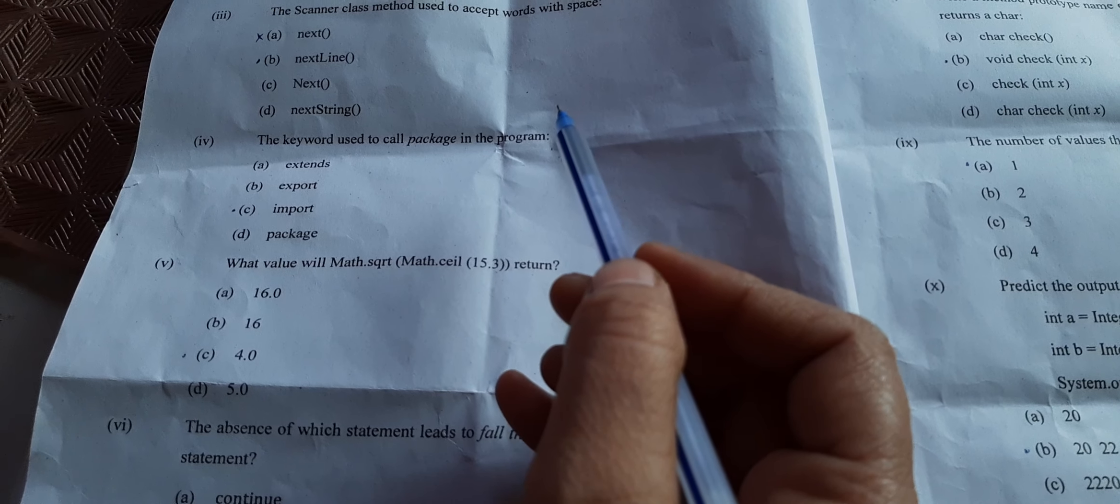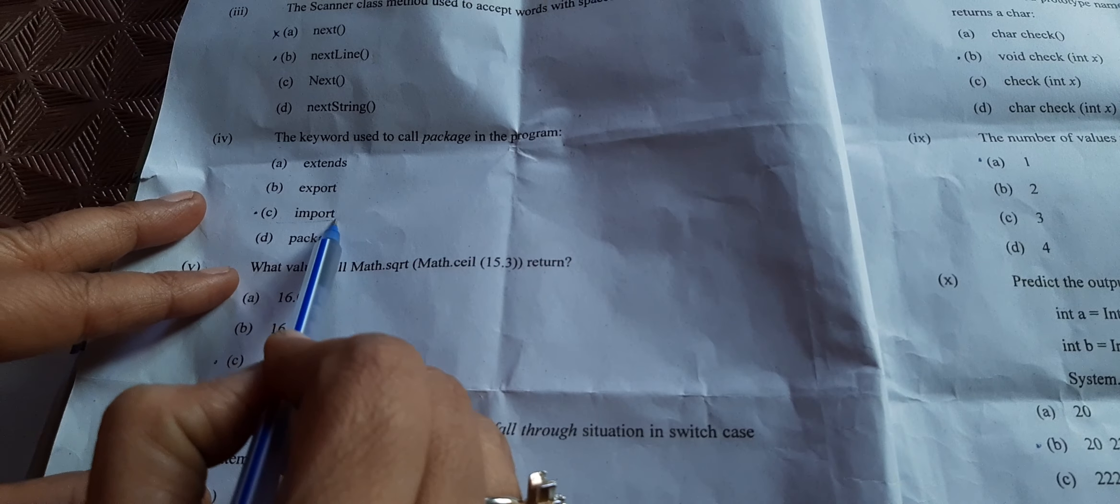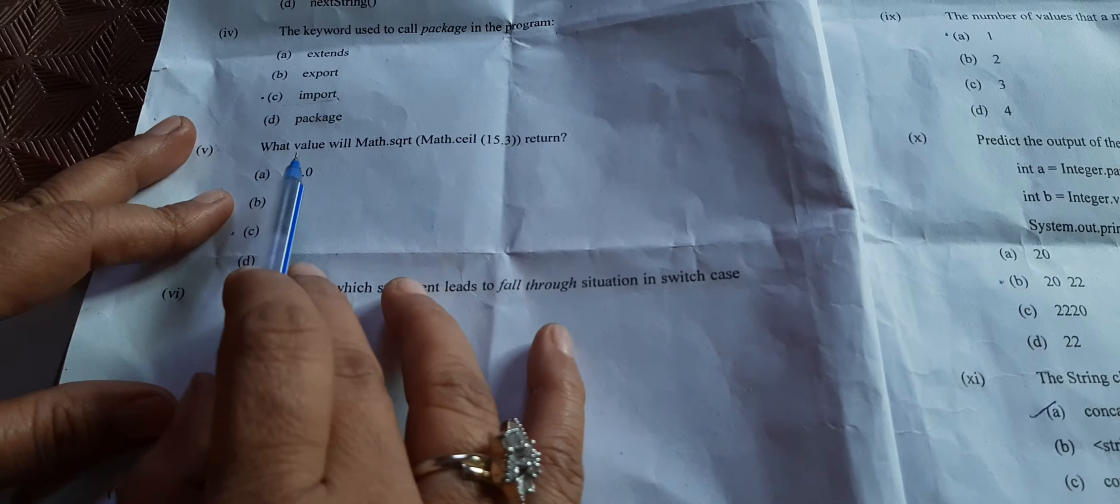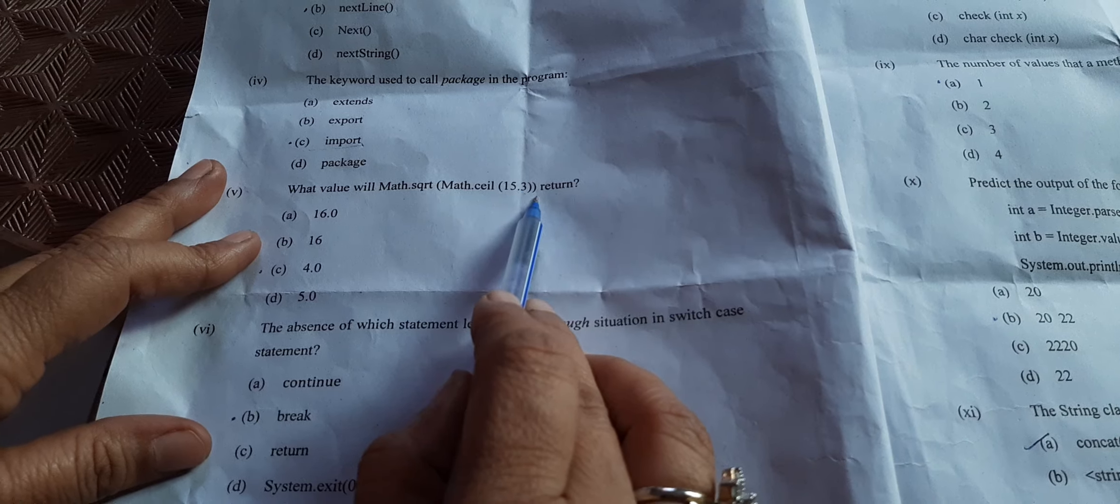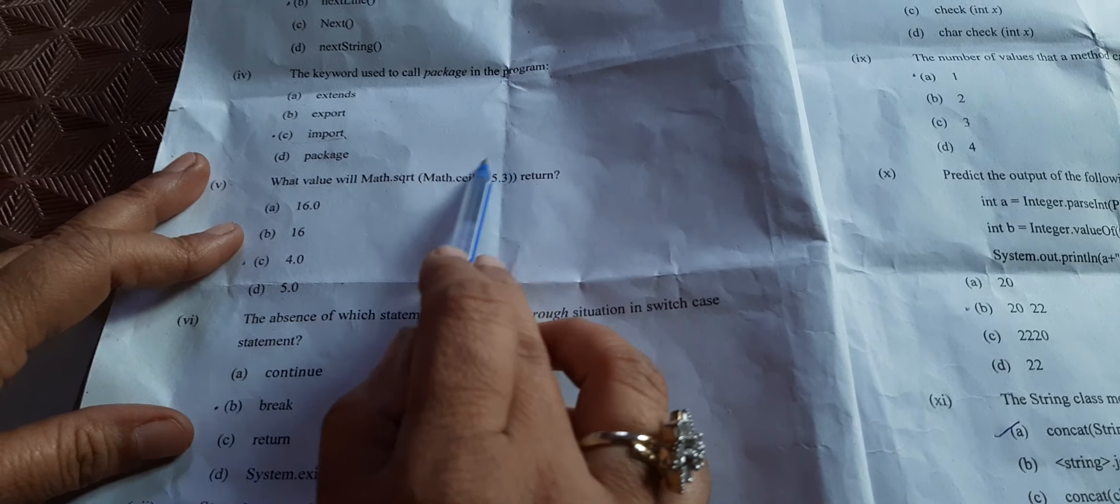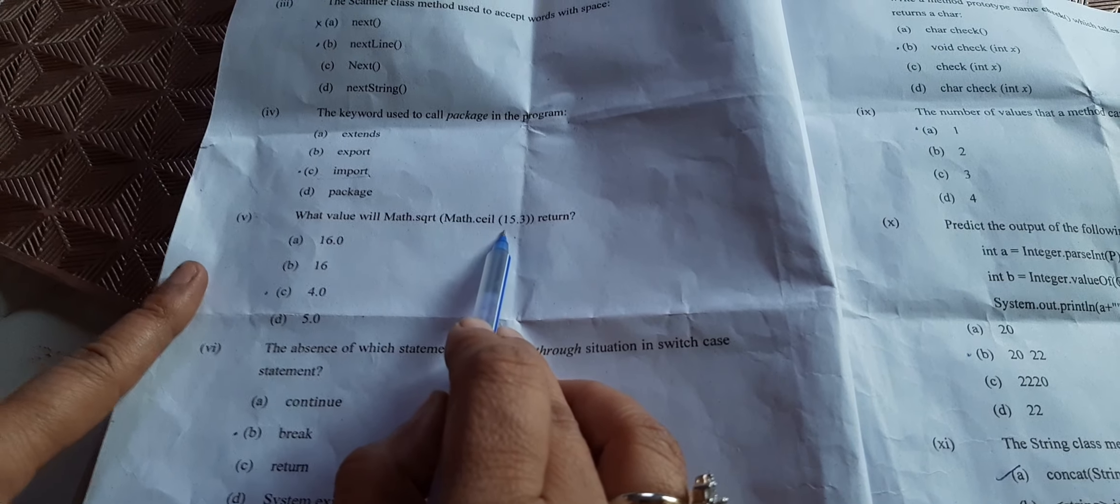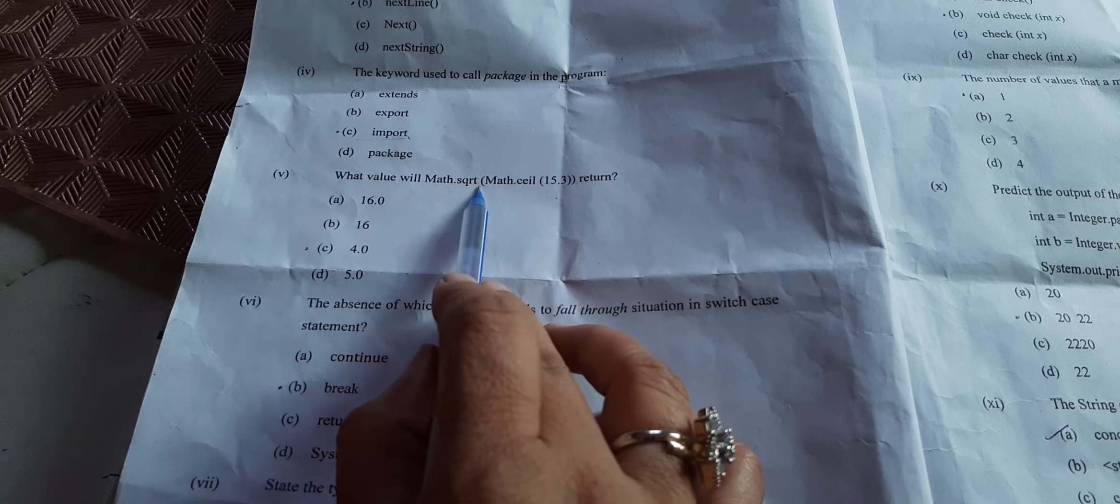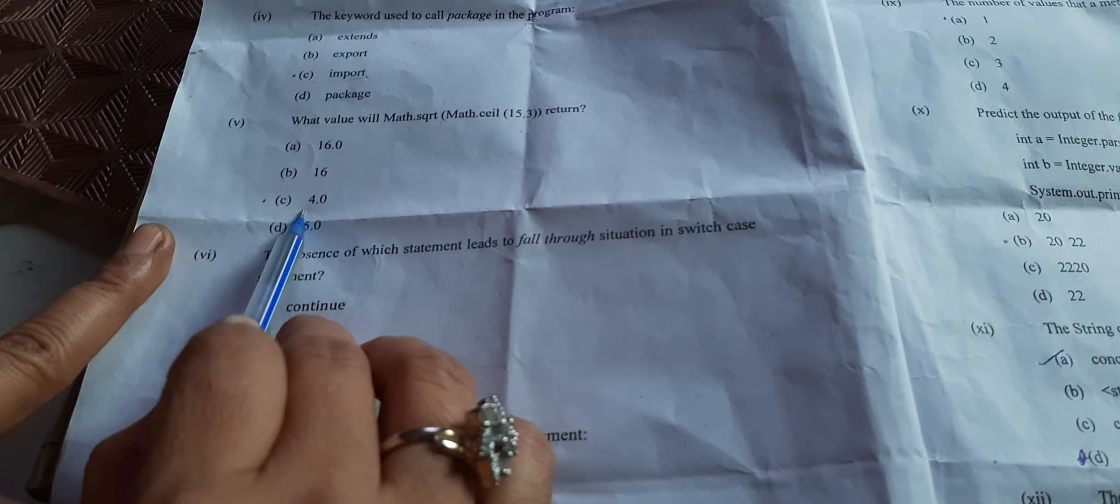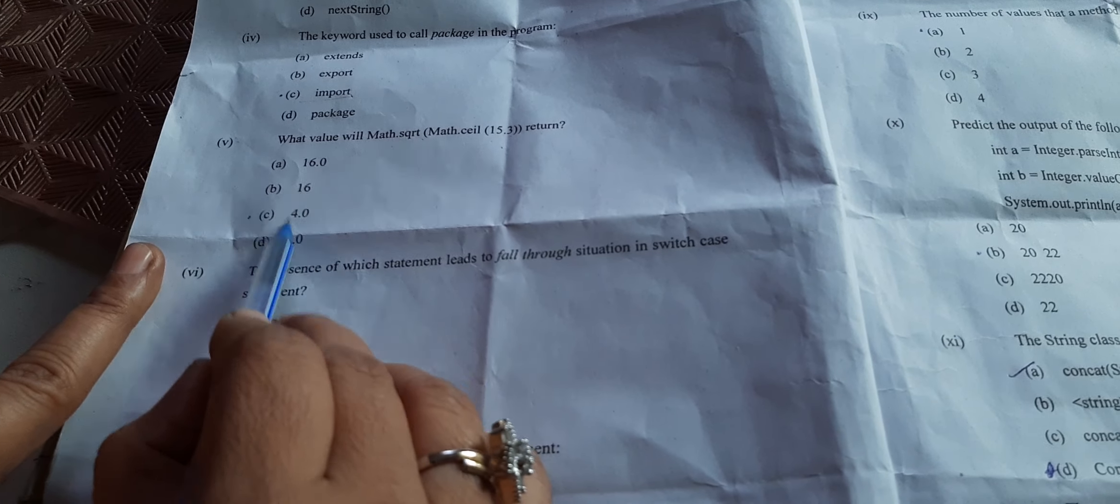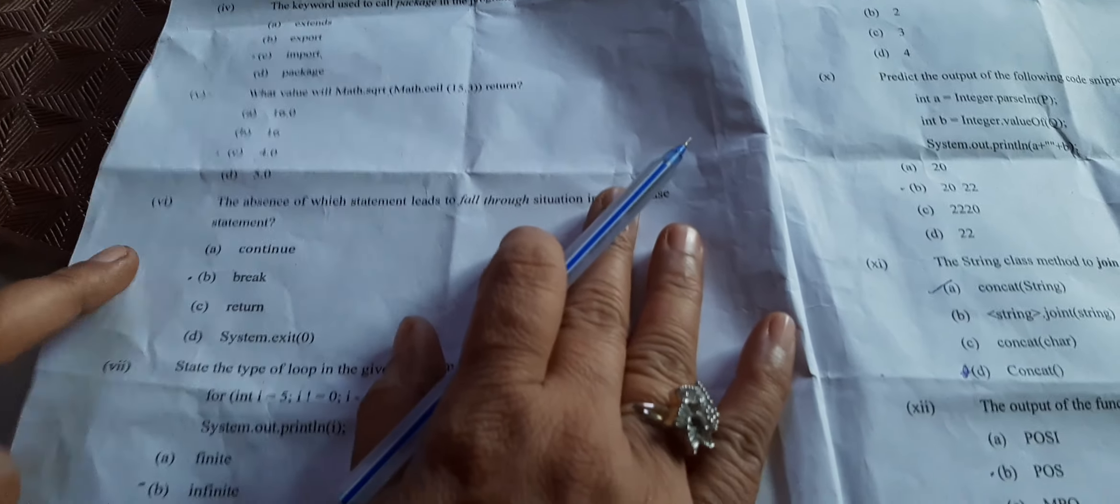The keyword used to call package in a program - we always write import java.util, java.lang, so the correct answer is import. What value will Math.sqrt(Math.ceil(15.3)) return? 15.3 will be converted by ceil to 16, and Math.sqrt gives answer in double type, so 16 square root will be 4.0. This is the correct answer.